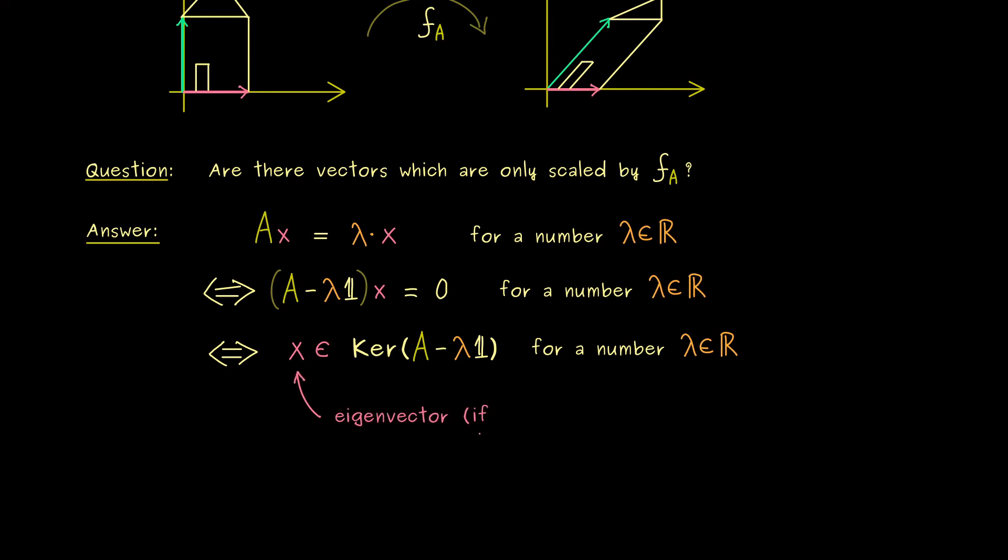And now you already know, this vector x in the equation is what we call an eigenvector of the matrix A. However, only if this vector is not the zero vector. This is easy to understand, because the zero vector always lies in the kernel. Or in other words, saying that the zero vector is only scaled is not interesting at all, because the zero vector is always sent to zero. Therefore, for eigenvectors, we will always exclude the zero vector.